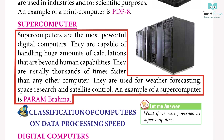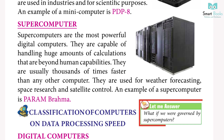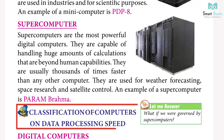Supercomputers: supercomputers are the most powerful digital computers. They are capable of handling huge amounts of calculations that are beyond human capabilities. They are usually thousands of times faster than any other computer. They are used for weather forecasting, space research, and satellite control. An example of a supercomputer is Param Brahma.